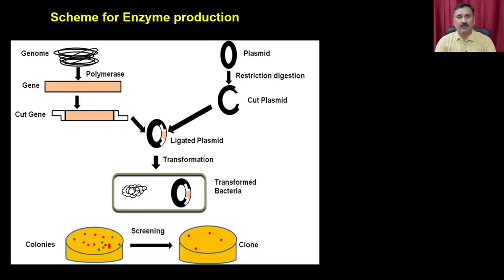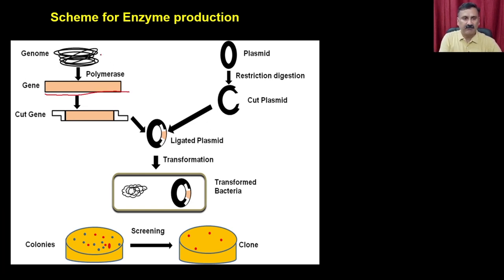Once you have cloned the fragment of your choice into the vector, the vector has to be delivered into a suitable host. In today's lecture, we are going to discuss the various methods you can use for delivering DNA into a suitable host. This is the scheme for enzyme production. We have already discussed isolating the gene fragment from the genome — either using a genomic library approach, cDNA approach, or PCR.